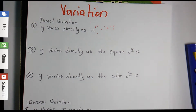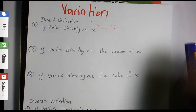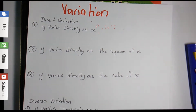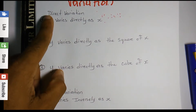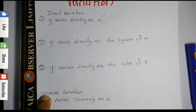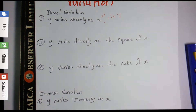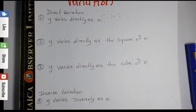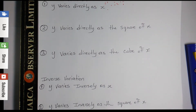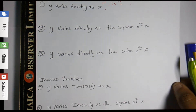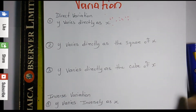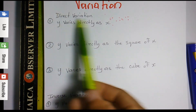In this video we'll be looking at variation, which is a topic based from algebra. With variation we have two types: direct variation and inverse variation. I have here some typical word phrases that they might use in the exam and ask you to solve questions based on them.